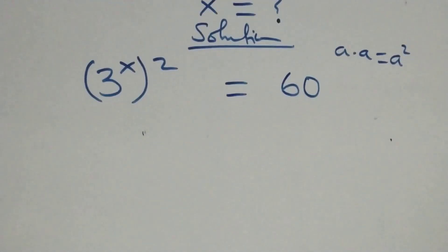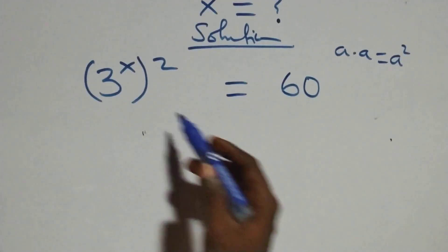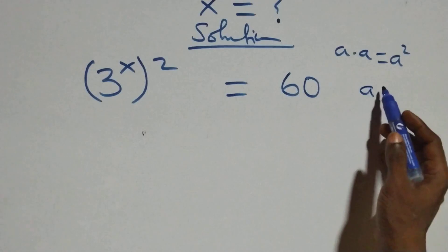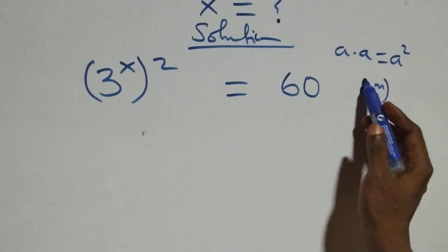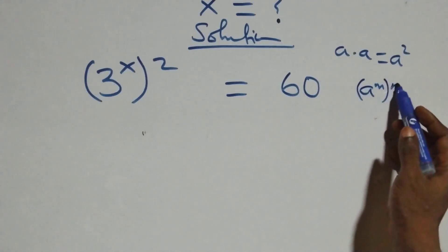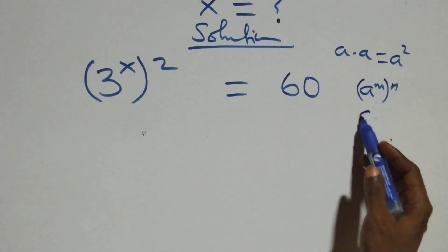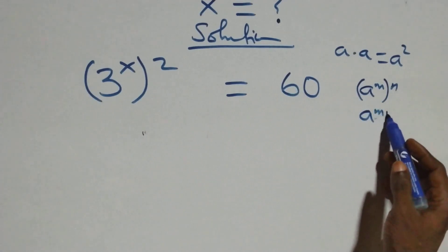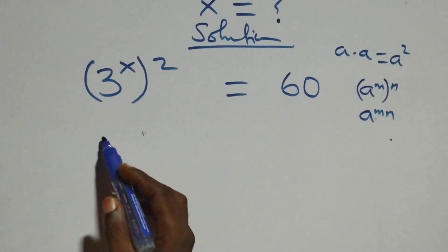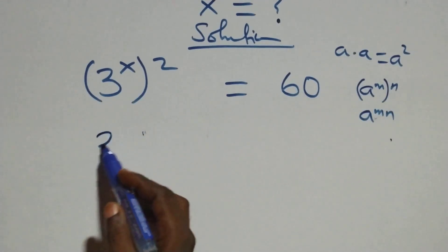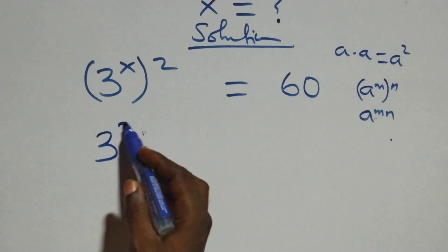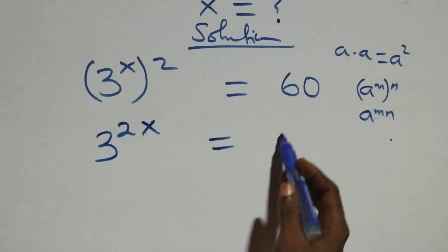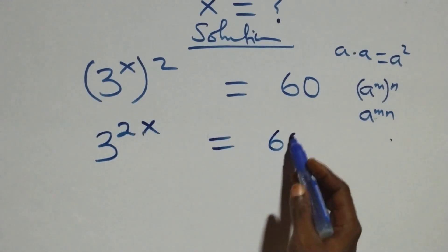The next step follows from the rule: a raised to power m, raised to power n, is the same thing as a raised to power mn. Applying this, the power multiplies and we have three raised to power two x equals sixty.